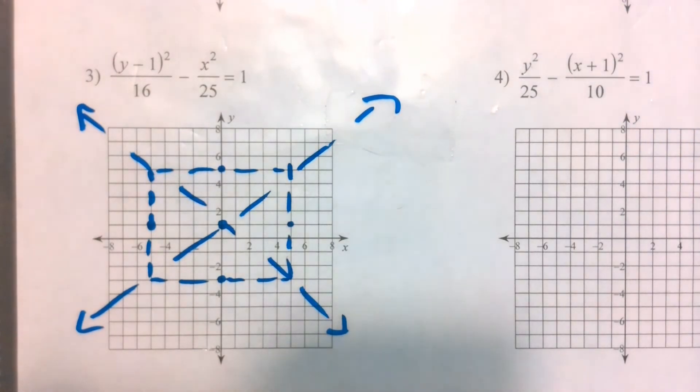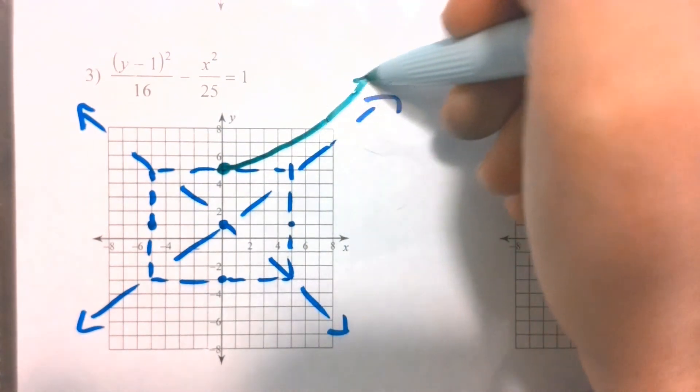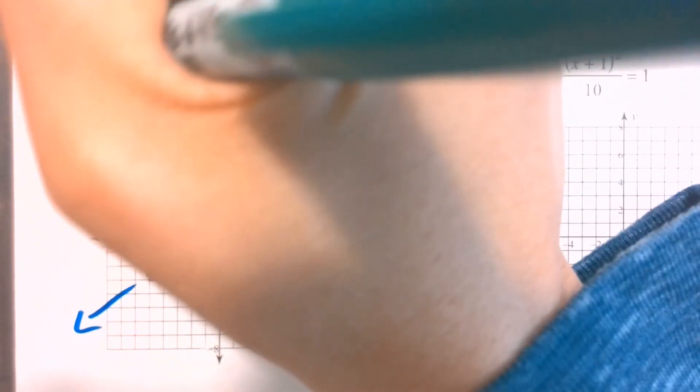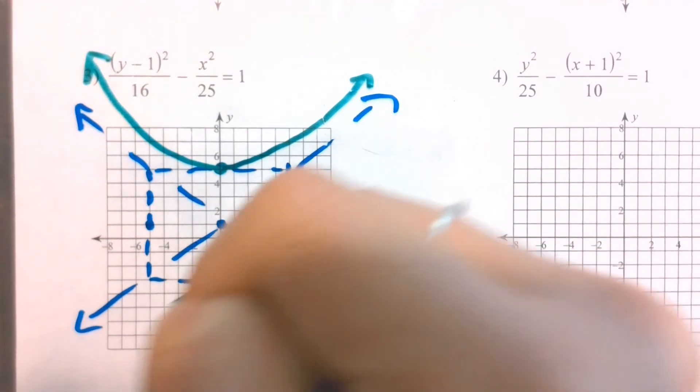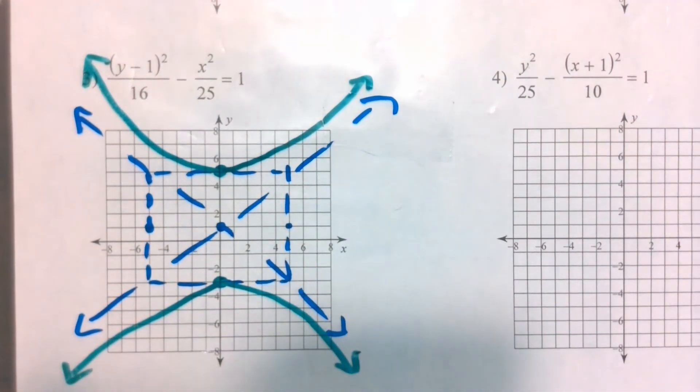And then my last step, because the y is the leading term, I know that my hyperbola is going to be vertical. So I'm using this vertex at the top and then the vertex at the bottom.